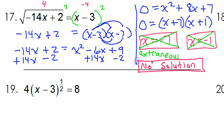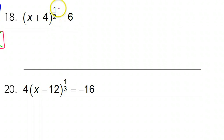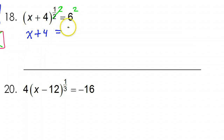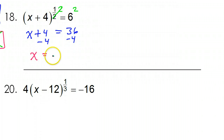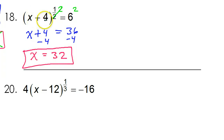Hopefully you're seeing how important it is that you check your answers. Number 18: it's time to do the reciprocal power to both sides. The reciprocal of 1/2 is 2, and these 2s will cancel each other out. That leaves x plus 4 equals 36. Subtract 4 from both sides, so x equals 32. That works out just fine — 32 plus 4 is 36, and the 1/2 power is the same as square root, so the square root of 36 is 6.